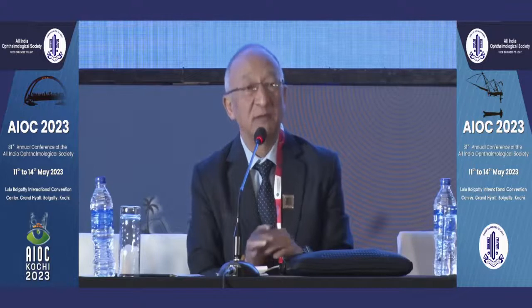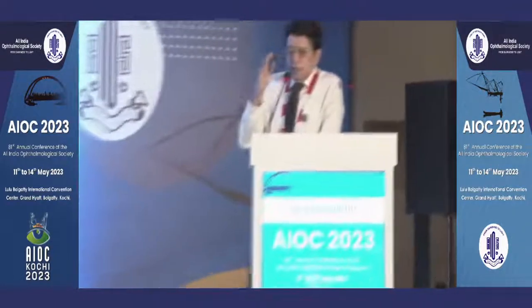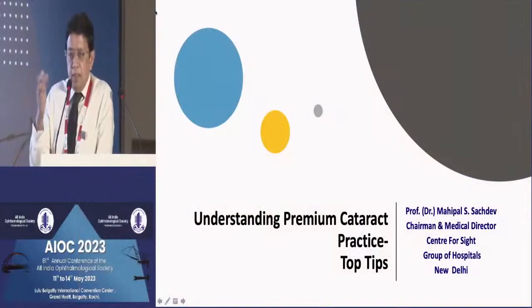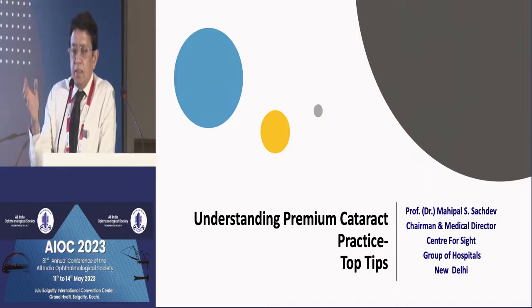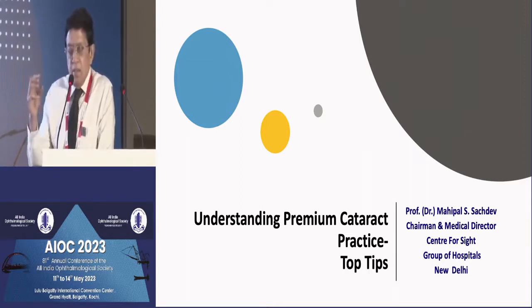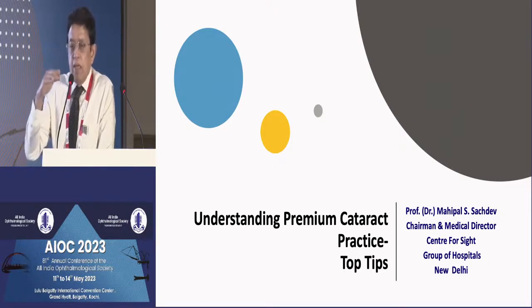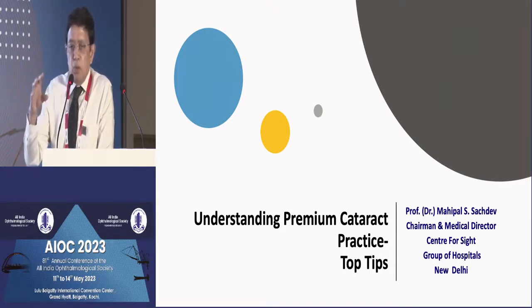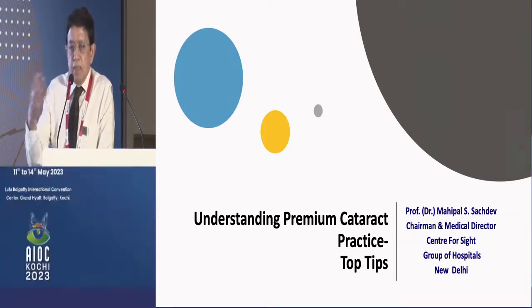Question: how do we tackle the patient with pterygium and cataract? If it is a small pterygium and the astigmatism in both eyes is nearly the same, I ignore the pterygium and proceed with conventional surgery. If it is a large pterygium — usually causing flattening along the 0–180 degree axis — and the astigmatism differs significantly from the fellow eye, I perform pterygium excision first, wait two to three weeks for the cornea to stabilize, remeasure corneal astigmatism, and then decide whether the patient needs a toric or non-toric IOL.